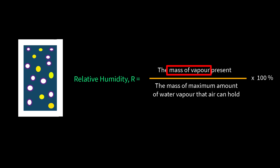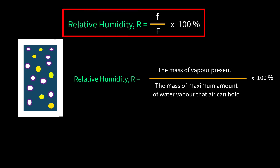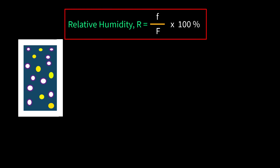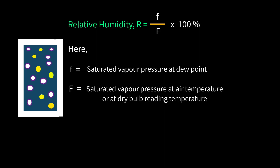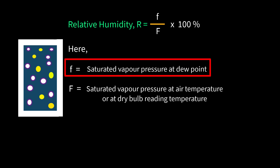Since we can only measure how much pressure vapor exerts, we use this alternative formula to determine relative humidity: relative humidity R equals small f over capital F, times 100 percent. Here, small f equals saturated vapor pressure at dew point, and capital F equals saturated vapor pressure at air temperature or dry bulb reading temperature.